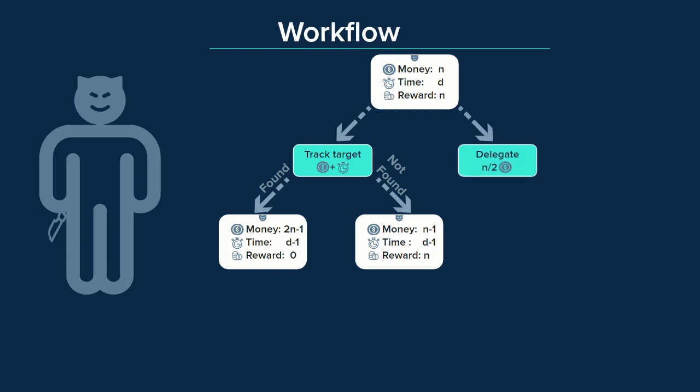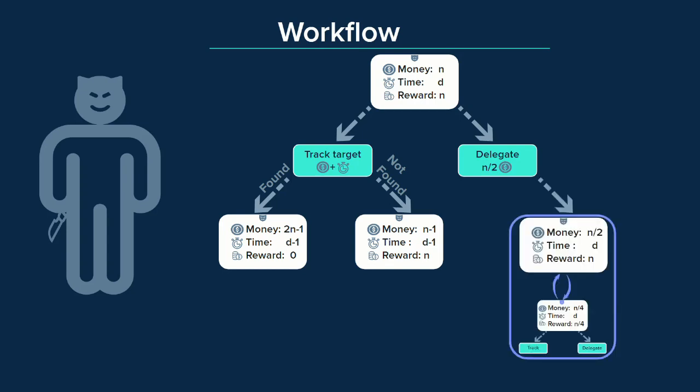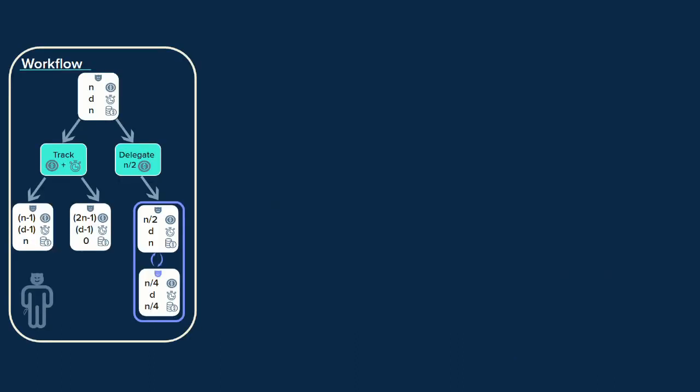Two: he can spend half of his remaining money on hiring a subcontractor, where he would start with a quarter of the bitcoins, d days to complete the job, and would be promised a quarter of the bitcoins as a reward. This new contractor would possess the exact same actions as Jacquin.